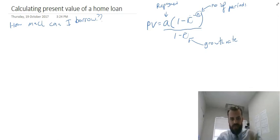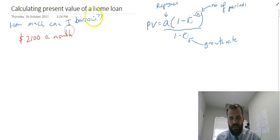We're not saving money to have it in the future. Instead, we're taking a bunch of money and we're paying it back over time. So let's say I can afford to pay $2,100 a month. And the interest rate on this particular home loan is going to be 6% per annum.